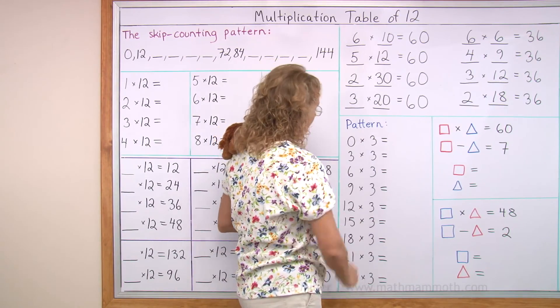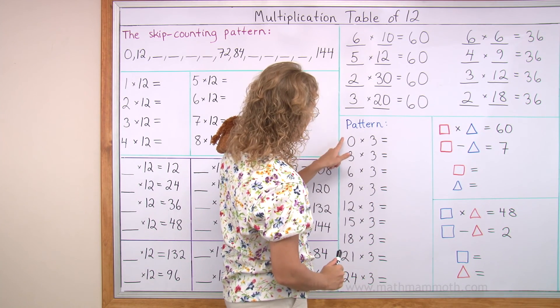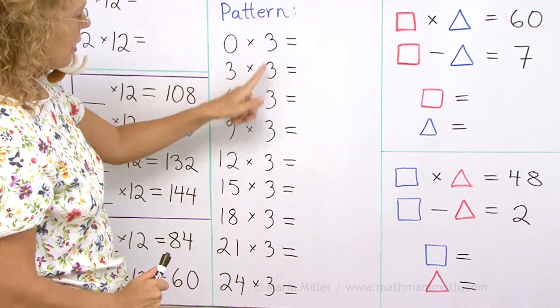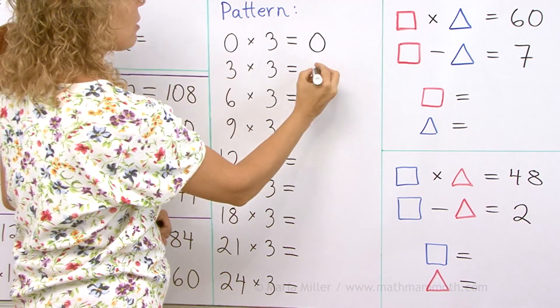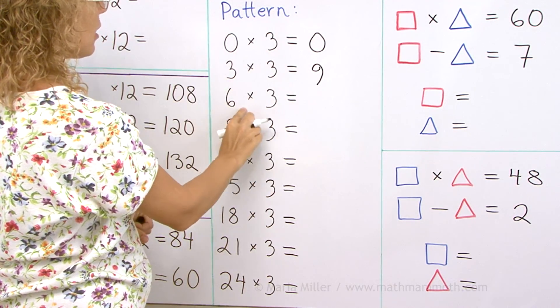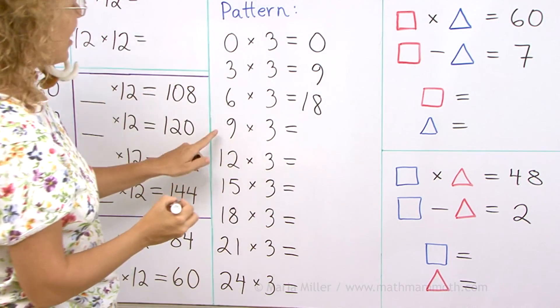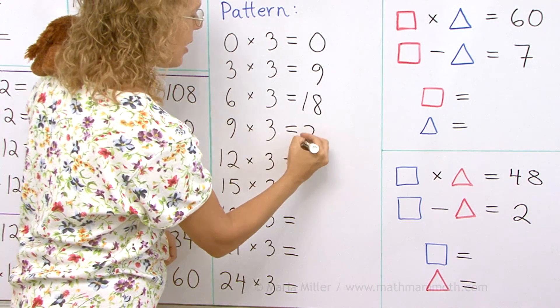Here is a pattern. It has threes. Times three: zero, three, six, nine. These are going by threes. And here we have the table of three. Zero times three is zero. Three times three is nine. Six times three. You tell me. Eighteen. Nine times three. The table nine. It's less than 30. It's 27.